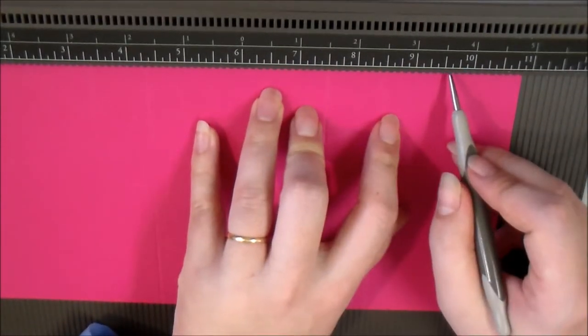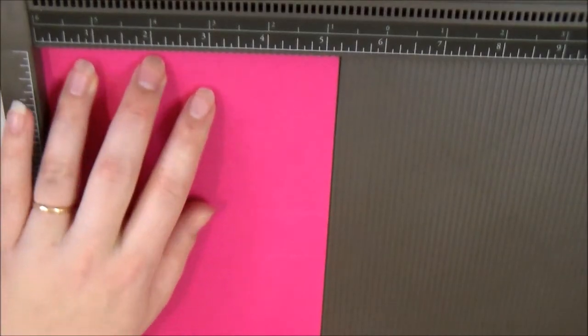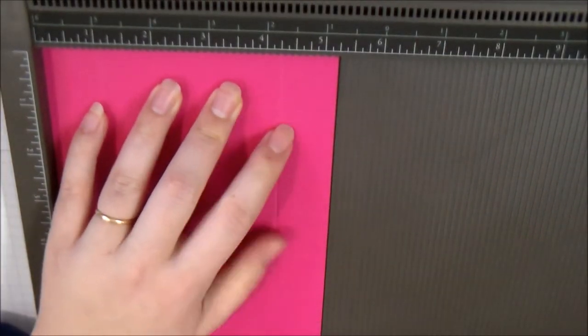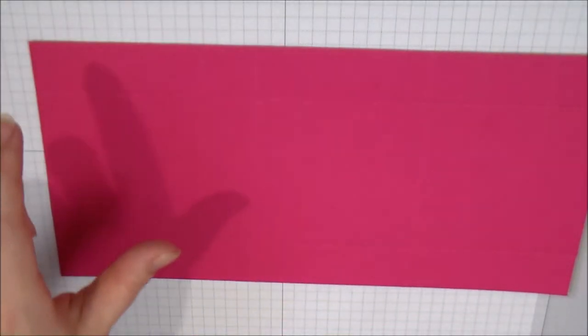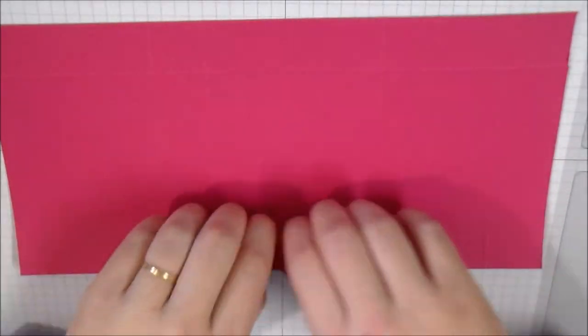This is all on the long side obviously, and then we're going to flip it around and we're going to score at 1 followed by 4 and 1/4. I'm going to move the scoreboard by the way, and then we're going to fold and burnish all of our score lines.